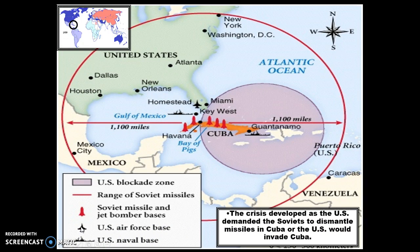This shows the range these missiles have — about 1,100 miles — meaning they could hit most American cities on the East Coast, including Washington, D.C. There's an obvious reason to be very afraid. The map also shows our naval bases at Guantanamo Bay and Key West, highlighting the major tension between the U.S. and Soviet Union.